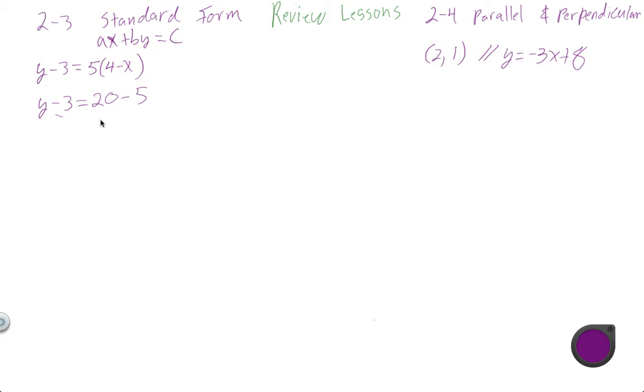Oh, I need my X. I need my X and my Y on the same side and everything else on the other side, so I'm going to get rid of that 3 by adding 3 to both sides. That gives me Y, those cancel.